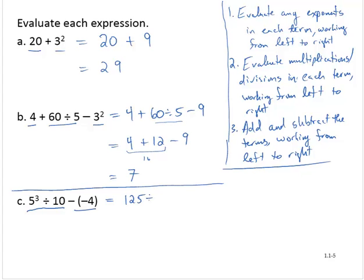So I have 125 divided by 10 subtract negative 4. Now there's still two terms, so I have to deal with that division first. 125 divided by 10 is 12.5 subtract negative 4. And now subtraction is addition of the opposite, so that's 12.5 add positive 4, which is 16.5.